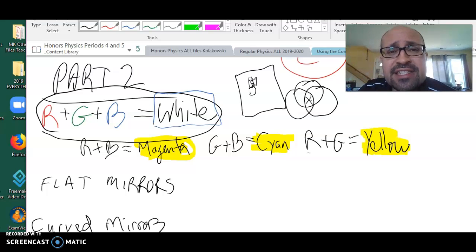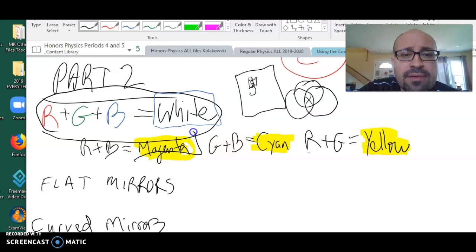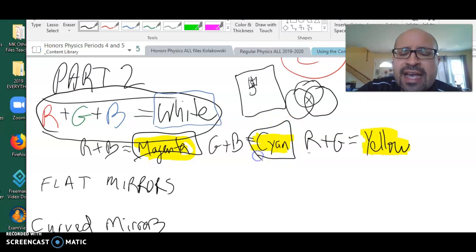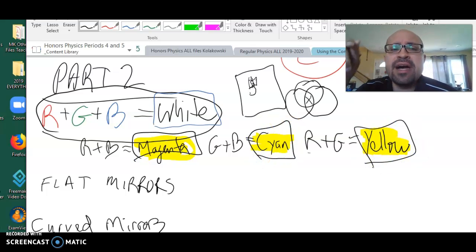Now, what's cool about this is you can create the secondary colors—magenta, cyan, and yellow—by adding two of the primary colors of addition. Red and blue makes magenta. Green and blue make cyan. Red and green makes yellow.